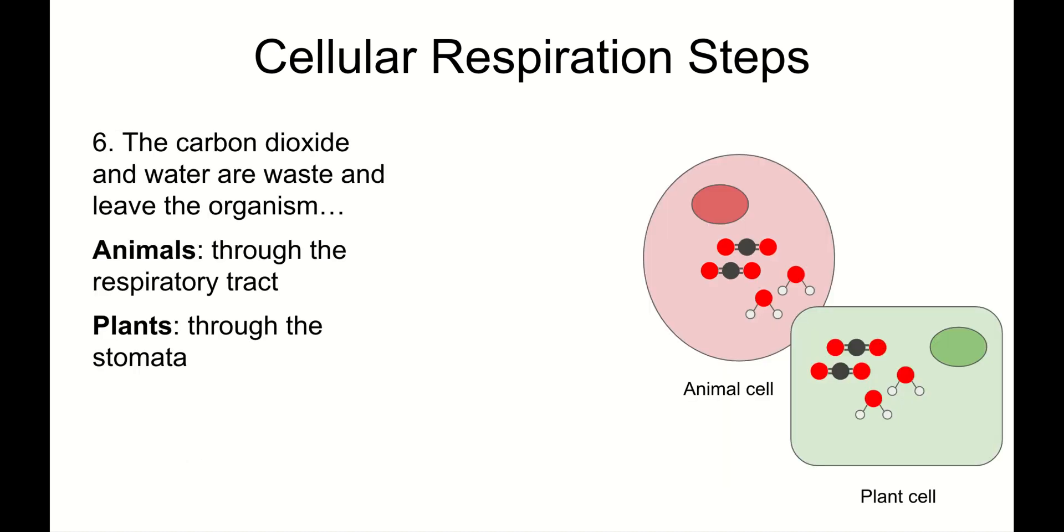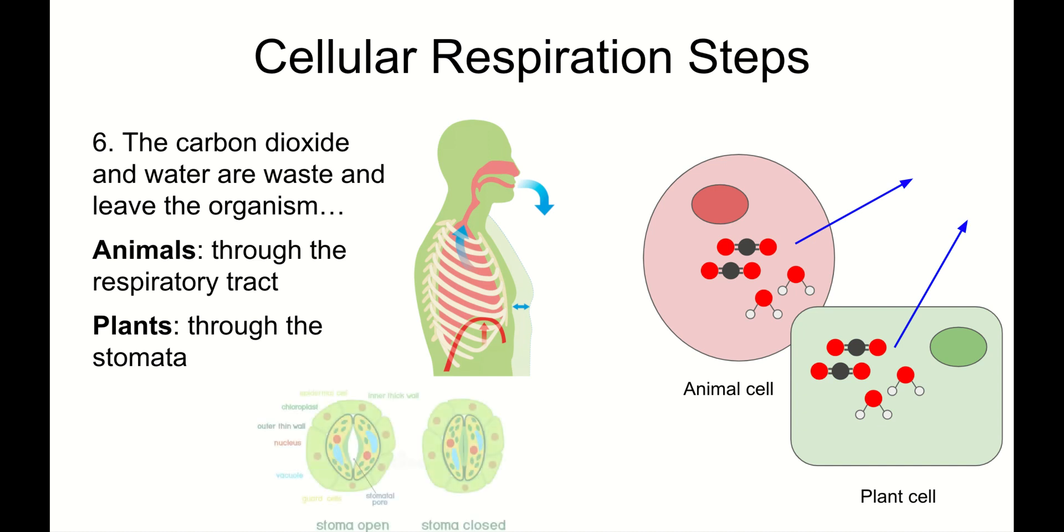Step six: The carbon dioxide and water are waste and leave the organism. In animals, the carbon dioxide and water will leave through the respiratory tract. You will breathe them out. In plants, they will exit through the stomata.